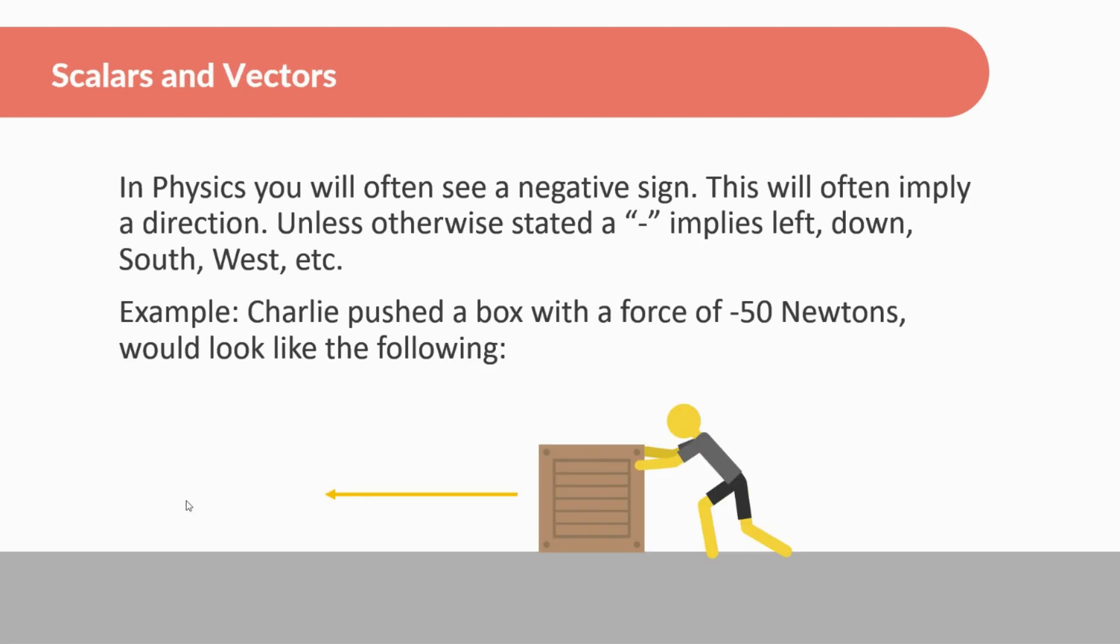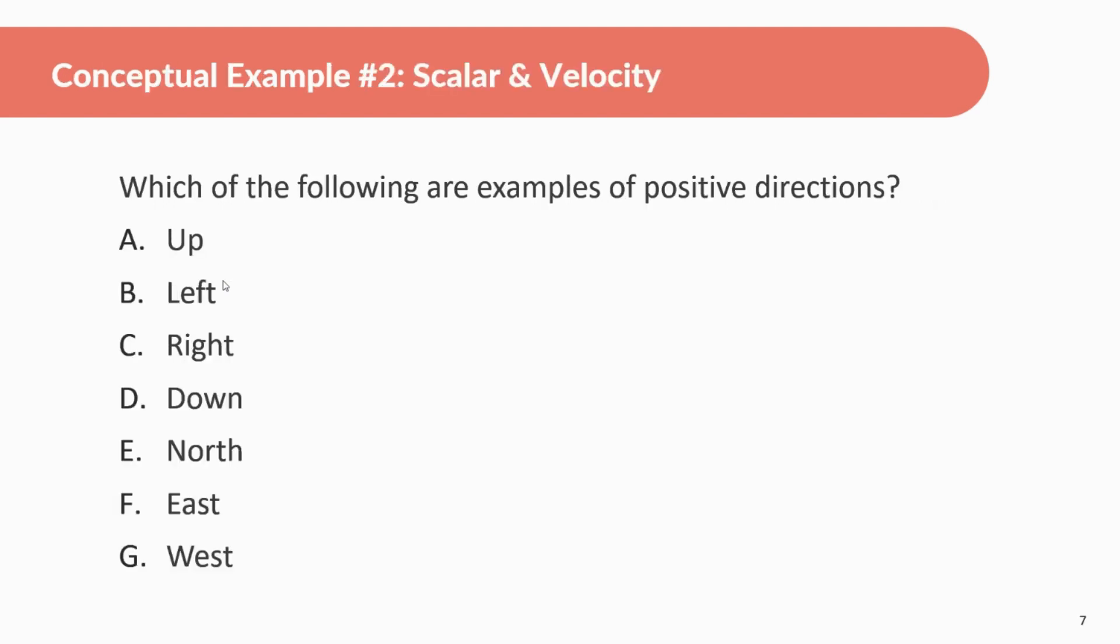Alright. In physics, you'll often see a negative sign. This will often imply a direction. Unless otherwise stated, a negative implies left, down, south, west etc. For example, Charlie pushed a box with a force of negative 50 newtons would look like the following. So this is what a drawing of something being pushed at negative 50 newtons is maybe going to the left. Just an example. It's not always the case that it's going left, down, south to west. Pretty much in these example problems that we do in this class, it will almost always be that case. But pretty much most of the time, unless it otherwise specifies, you can assume that negative usually means left, down, south, or west. And that'll make more sense as time goes on.